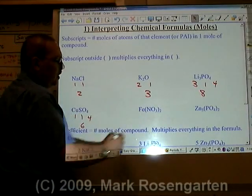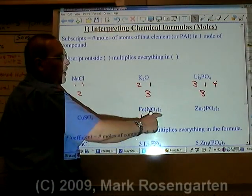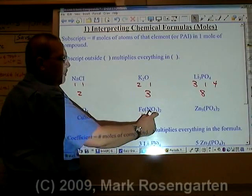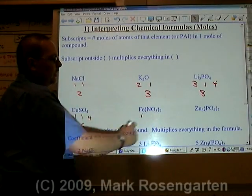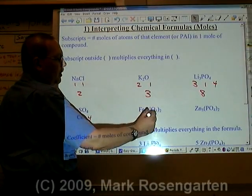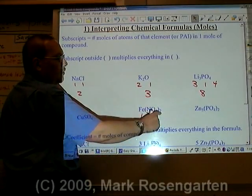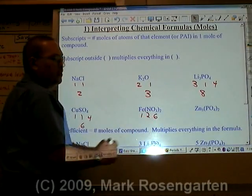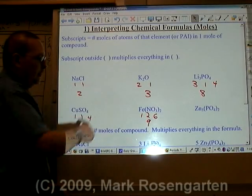In iron-to-nitrate, there's one mole of iron. This two outside the parentheses distributes to everything inside the parentheses. Therefore, there's two times one or two moles of nitrogen, two times three or six moles of oxygen for a total of nine moles of atoms.